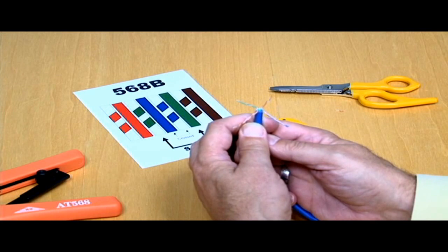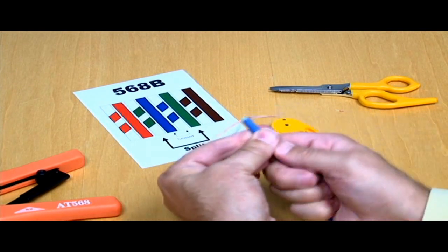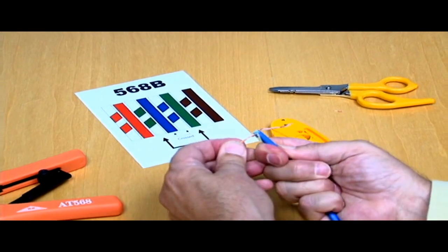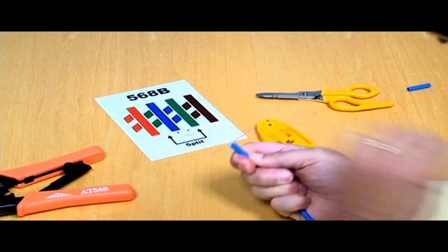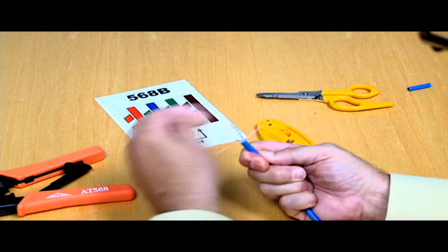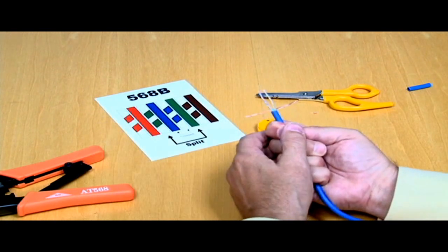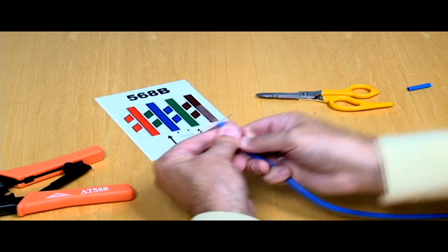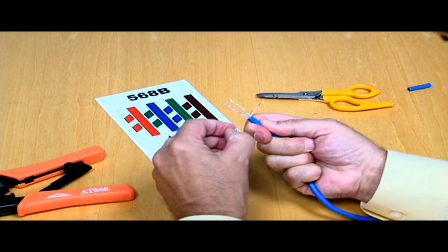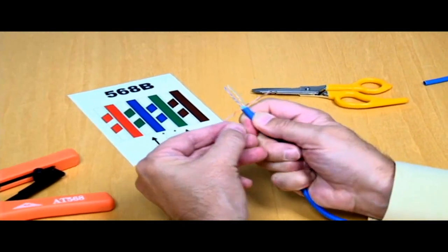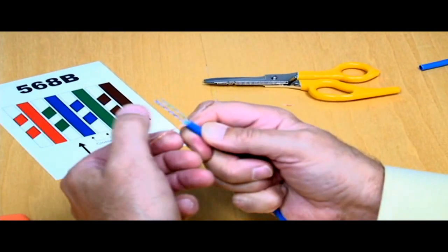Then I like to arrange the conductors in the proper order. So I put the orange pair to the left, the brown pair to the right, and then the other two pairs I just need to get them out of the way. And so we're going to start with the orange pair. We're going to unlock or untwist the orange pair.